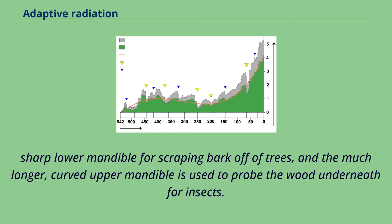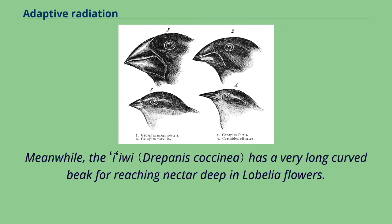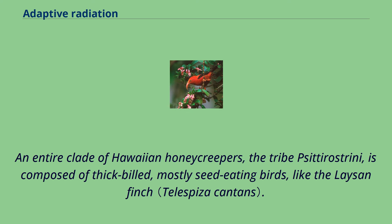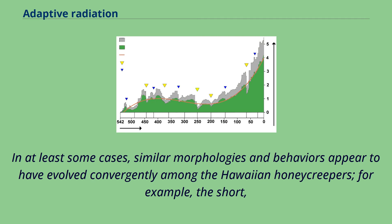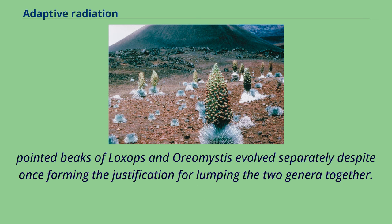Meanwhile, the iiwi has a very long curved beak for reaching nectar deep in lobelia flowers. An entire clade of Hawaiian honeycreepers, the tribe Psittirostrini, is composed of thick-billed, mostly seed-eating birds like the Laysan finch. In at least some cases, similar morphologies and behaviors appear to have evolved convergently among the Hawaiian honeycreepers. For example, the short, pointed beaks of Loxops and Oreomystis evolved separately despite once forming the justification for lumping the two genera together.